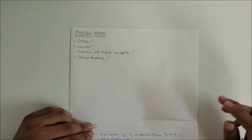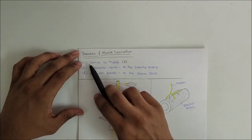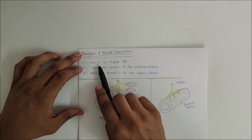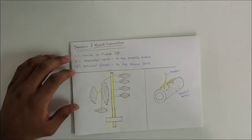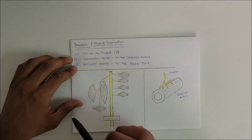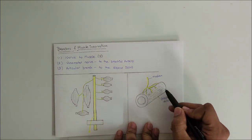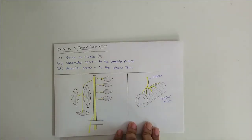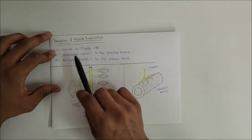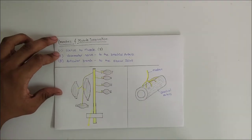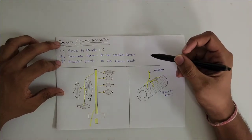Done with origin and course — now doing branches and muscle innervation. This is divided into three headings: first, nerve to muscles; second, vasomotor nerve to the brachial artery — median nerve gives branches to the smooth muscles of the brachial artery so it can dilate or constrict; and third, articular branch to the elbow joint — the median nerve also gives a branch to the elbow joint.